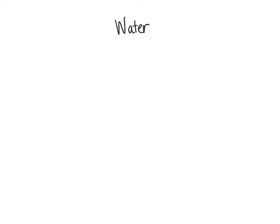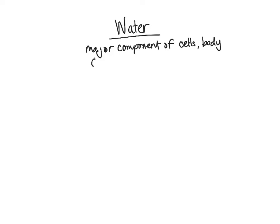We're going to talk about water and its importance in the body and how different molecules interact with it. Water makes up the majority of our body weight and the majority of all of the cell's content. Each one of our cells is composed mainly of water, and therefore our body is composed mainly of water. Water is very important because it takes part in almost all of the chemical reactions in our body.